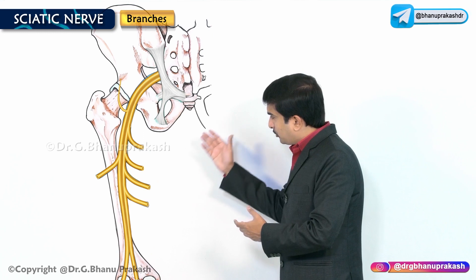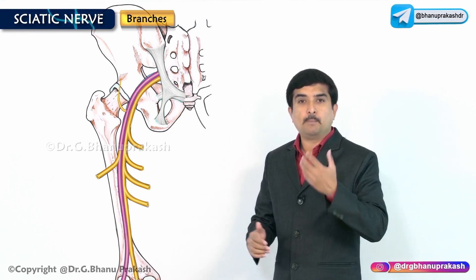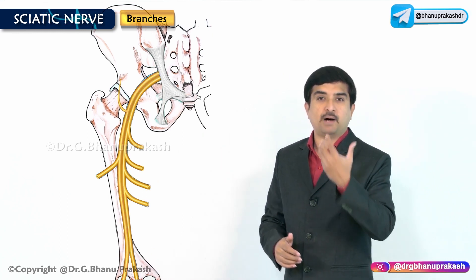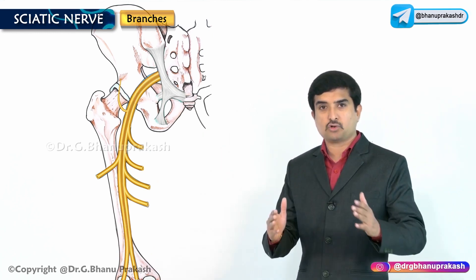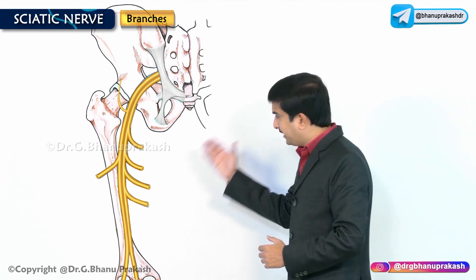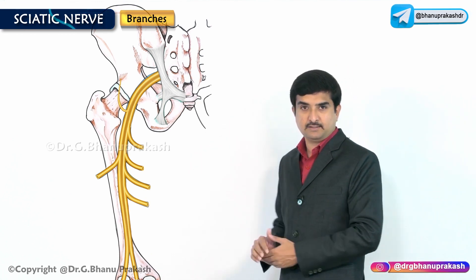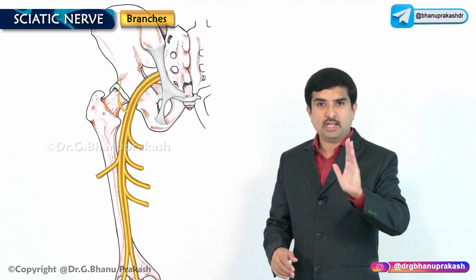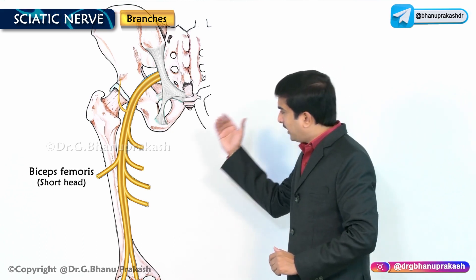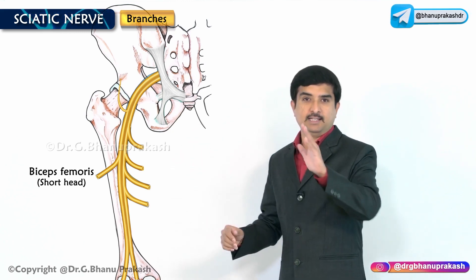The common peroneal part of the sciatic nerve, which is also called the lateral component, supplies only the short head of the biceps femoris and nothing else.